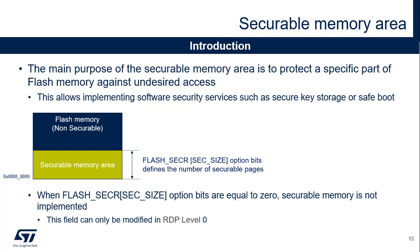The purpose of the securable memory is to store code and data available during boot time that becomes inaccessible once the boot program sets a control bit. The typical use case consists in performing authentication and possibly decryption of the software image present in the flash memory by using cryptographic keys contained in the securable memory. The authentication and decryption programs are also stored in the securable memory. Option bits are used to set the size of the securable memory in page units. The base address is always 0x08000000, which corresponds to Cortex-M0+ reset vectors. When the sec_size field of the option bytes is equal to 0, securable memory is disabled. This field can only be modified in RDP level 0.